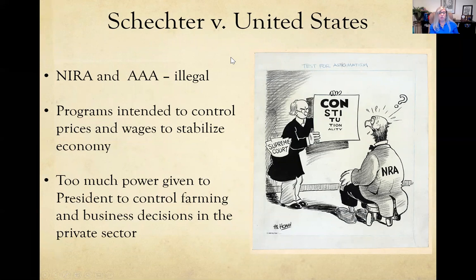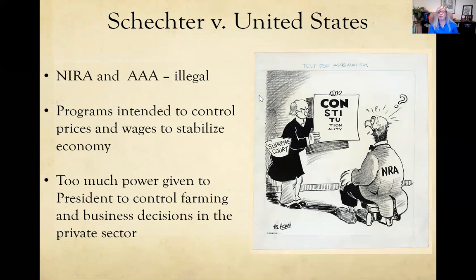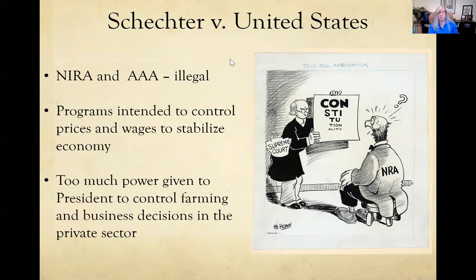A major legal challenge came from the court case Schechter versus the United States, which declared the National Industrial Recovery Administration and the Agricultural Adjustment Act illegal. The government had been dictating to businesses how much to produce, what to charge, and how to pay their workers — and that was ruled unconstitutional.